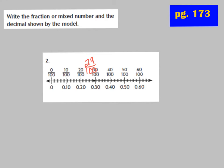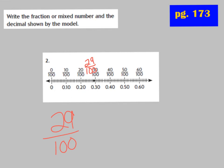So 29 hundredths is my fraction for that point. In decimal form, just like 30 hundredths goes to the hundredths place, 29 hundredths goes there too. We have: 0 wholes, decimal point, and 29 hundredths — with 2 in the tenths place and 9 in the hundredths place: 0.29.